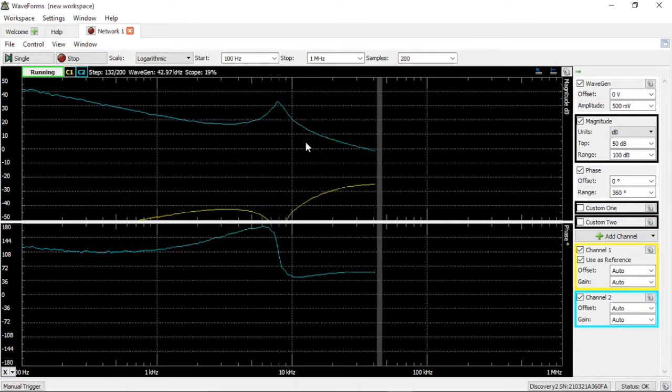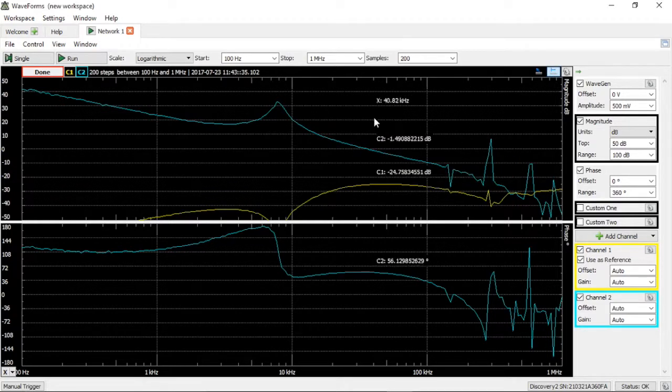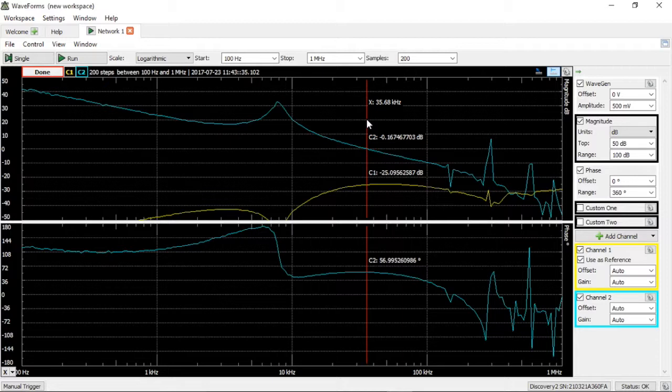So the loop gain in blue here is roughly what we expect to see from our calculation. We can take a look at our crossover frequency, and that's about 35.7 kHz, and our phase margin at this point is 57 degrees. So that indicates a very stable converter.